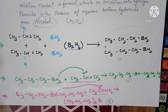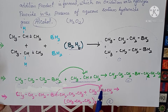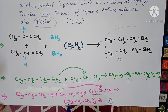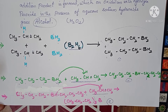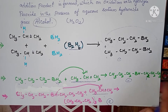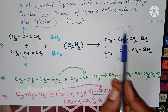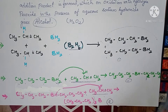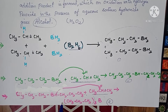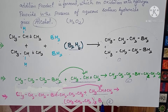Now again propene is added and the hydrogen attaches over there, and the double bond breaks. The final product is (CH3-CH2-CH2)3-B — tri-propyl borane. In this compound we are adding hydrogen peroxide in the presence of sodium hydroxide.